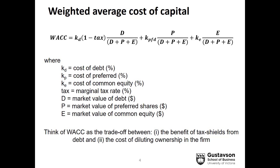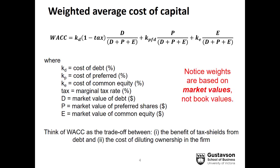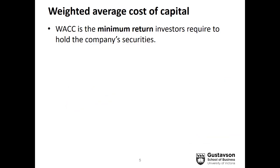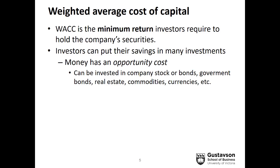The weights are going to be based on the percentage or proportion of debt, preferred, and equity in the capital structure, where the capital structure is simply the sum of those three components. Most importantly, notice that the weights are going to be based on market values and not on their historical or book values. So the weighted average cost of capital is really the minimum return that investors are going to require to hold the company's securities.